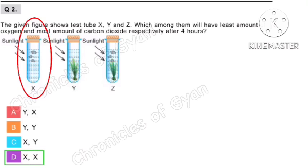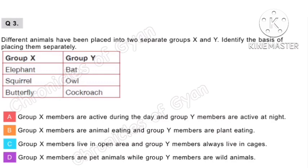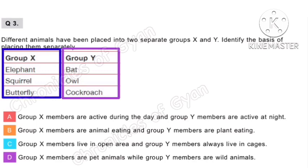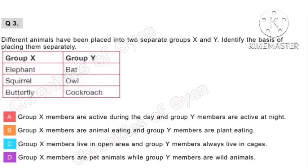Question 3. Different animals have been placed into two separate groups X and Y. Identify the basis of placing them separately. Group X has elephant, squirrel, and butterfly; Group Y has bat, owl, and cockroach. Option A: Group X members are active during the day and Group Y members are active at night — this is correct. Option B (animal eating vs. plant eating) is incorrect. Option C (open area vs. cages) is incorrect. Option D (pet vs. wild animals) is incorrect — elephant is not a pet animal. So the correct answer is option A.